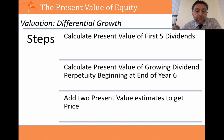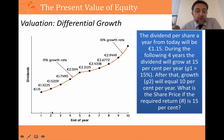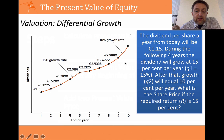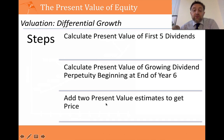How do we value this? There are a number of steps. First, we take the high growth period and find the present value of each of those dividends — so we calculate the present value of the first five dividends. Second, we find the present value of the dividend stream starting at year six. The growth rate of 10% has kicked in, we have the dividend at year six, and we calculate the present value of that growing perpetuity. Once we have both, we add them together to get the price.